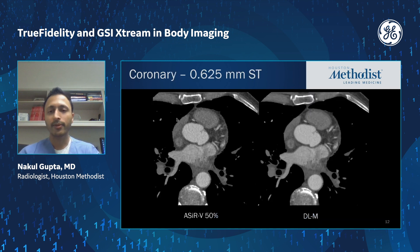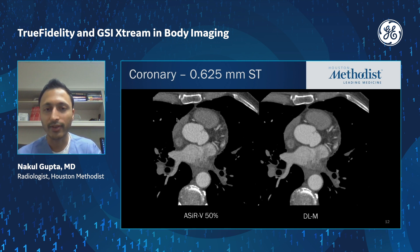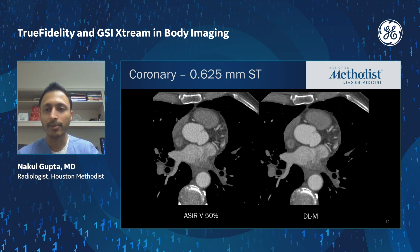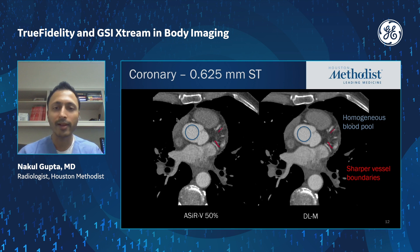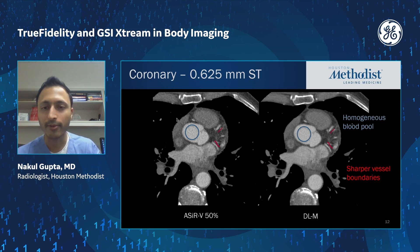Coronary CTA was actually one of the first places we implemented deep learning reconstruction. On this 0.625-millimeter slice thickness scan, the ACER-V image at 50% strength versus the deep learning medium strength gives you slightly sharper vessel boundaries while at the same time having a more homogeneous blood pool. We've applied this now across the board to all CTA exams for this reason.